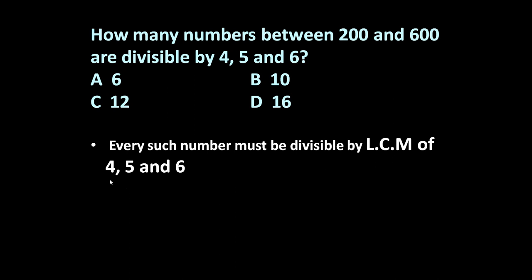The LCM of 4, 5, 6 is equal to 60. So the numbers divisible by 60 and between 200 and 600 will be divisible by 4, 5, and 6 respectively.